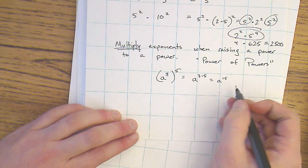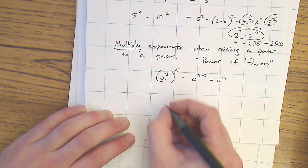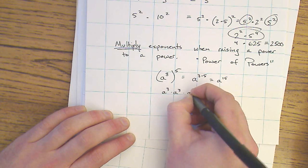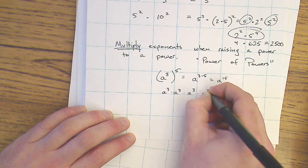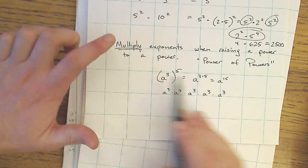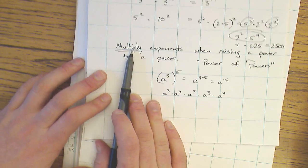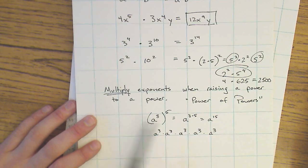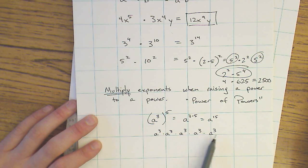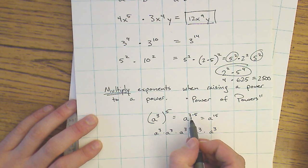You can think about why that's true because a to the 3rd raised to the 5th power means I have a to the 3rd times a to the 3rd times a to the 3rd 5 times. This rule you should start to see is related to our last rule because now that I've raised a to the 3rd to the 5th power, I could just add these exponents. And we know that the faster way to add them is to just multiply, 3 times 5.